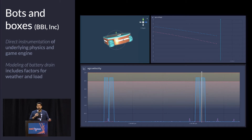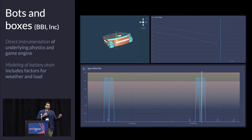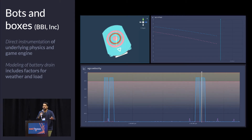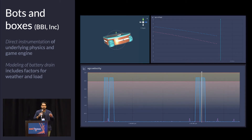A couple of examples of that are modeling things like battery drain based on AGV load — measuring the weight of the pallet on the AGV and how that directly impacts the actual battery — things that make this feel like a real-world application.